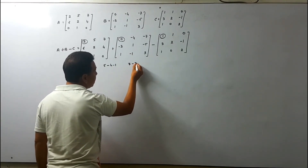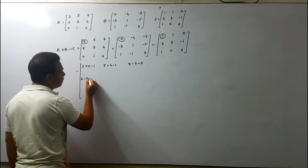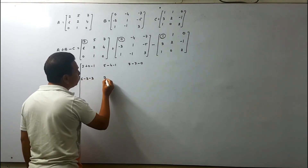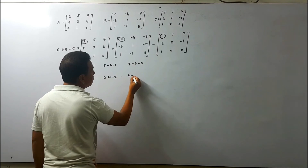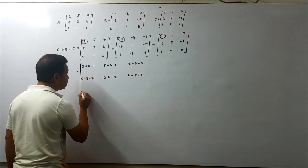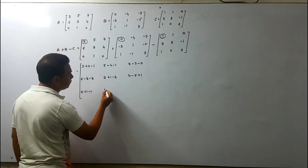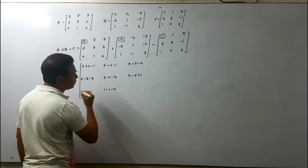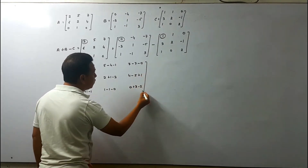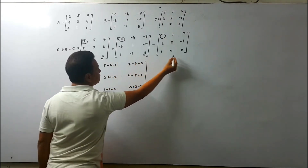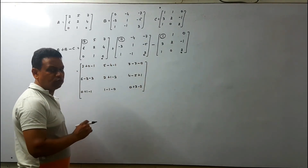Continuing element by element: 6 minus 3 minus 3, then 2 plus 1 minus 2, 4 minus 5 plus 1, then 0 plus 1 minus 1, 1 minus 1 minus 0, then 0 plus 3 minus 2. You must maintain the place value of the elements — care should be taken while doing addition and subtraction.